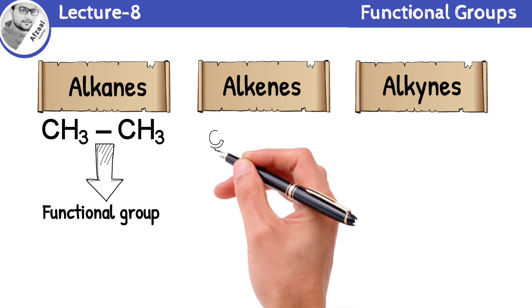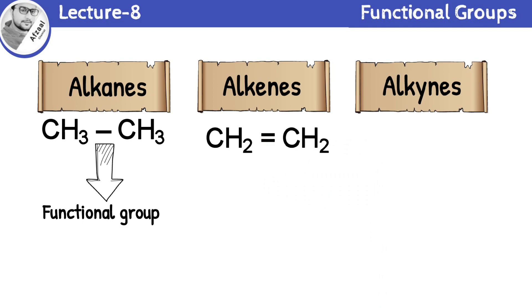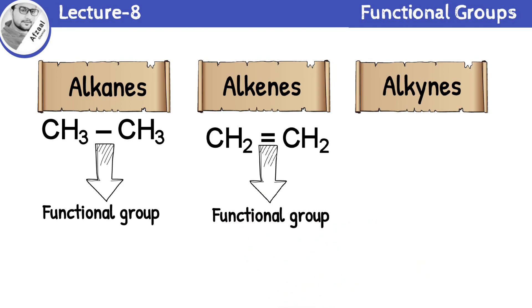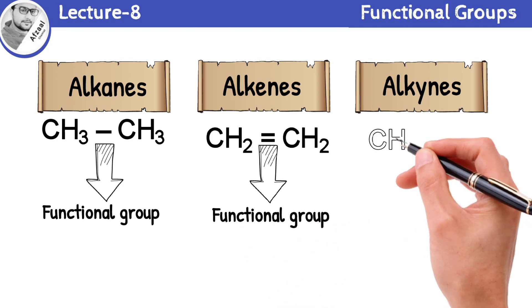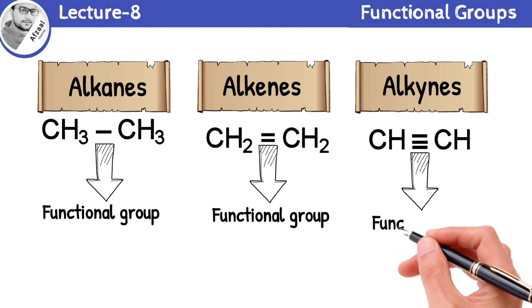Now, let's move on to alkenes. These hydrocarbons have at least one carbon-carbon double bond. The functional group for alkenes is that double bond. Lastly, we have alkynes. These hydrocarbons contain at least one carbon-carbon triple bond. The functional group for alkynes is the triple bond.